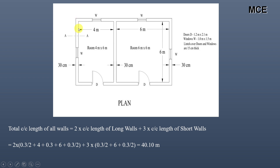The center length of the long walls is measured from the center point of one end wall to the center point of the other: 0.3/2 + 4 meters + 0.3 + 6 meters + 0.3/2. The center length of the short walls is: 0.3/2 + 6 meters + 0.3/2. The total center length of all walls comes out to 40.10 meters.